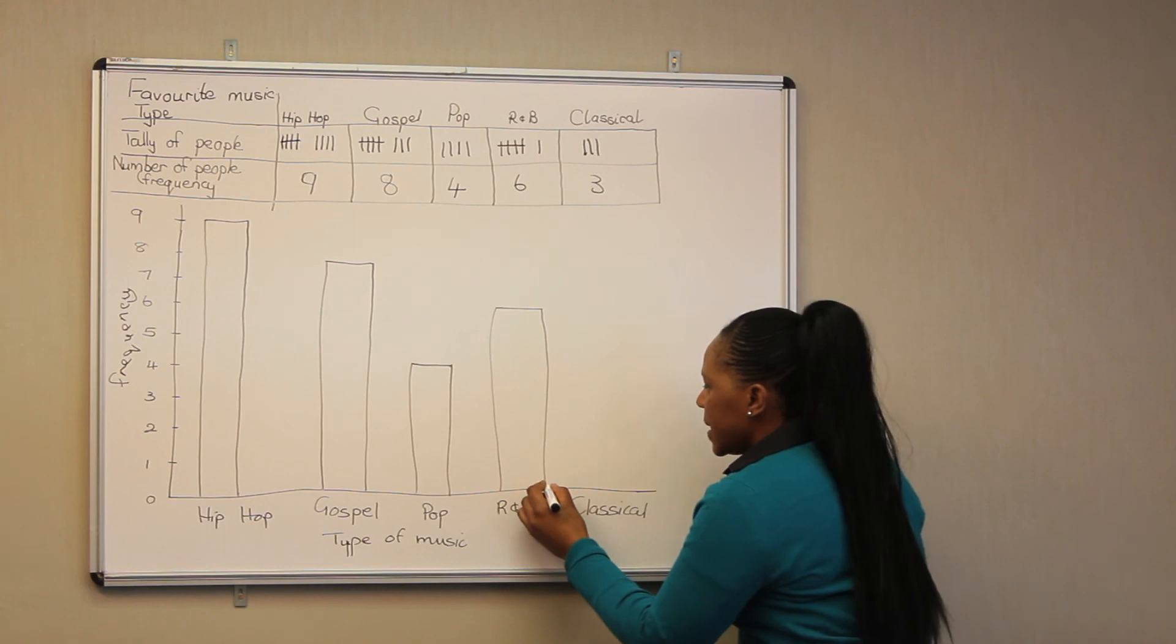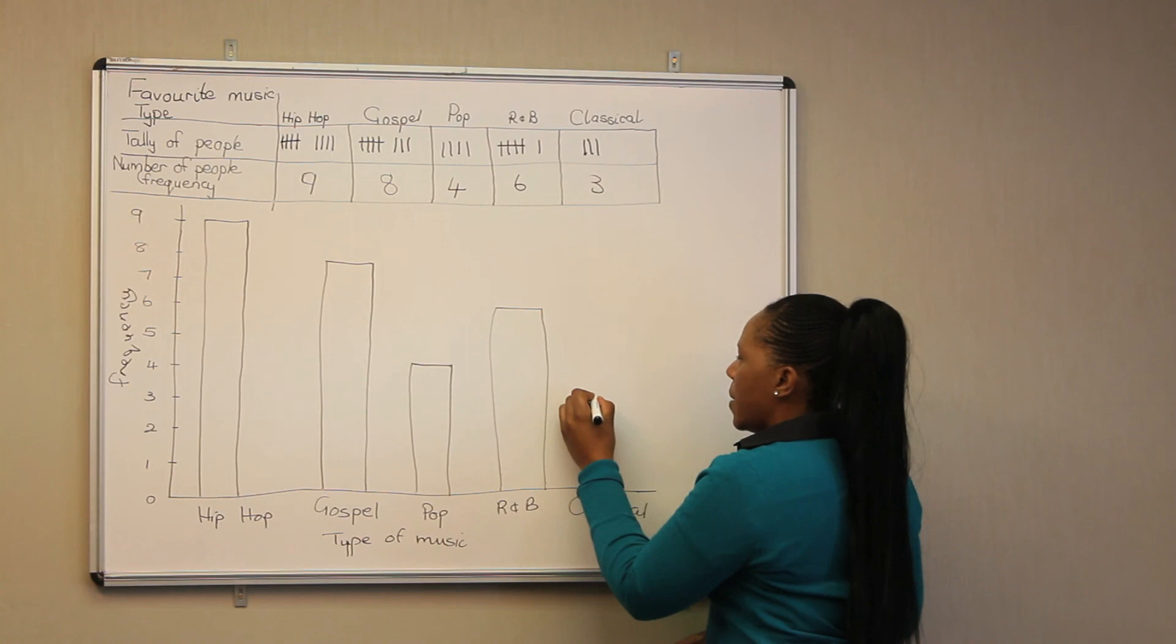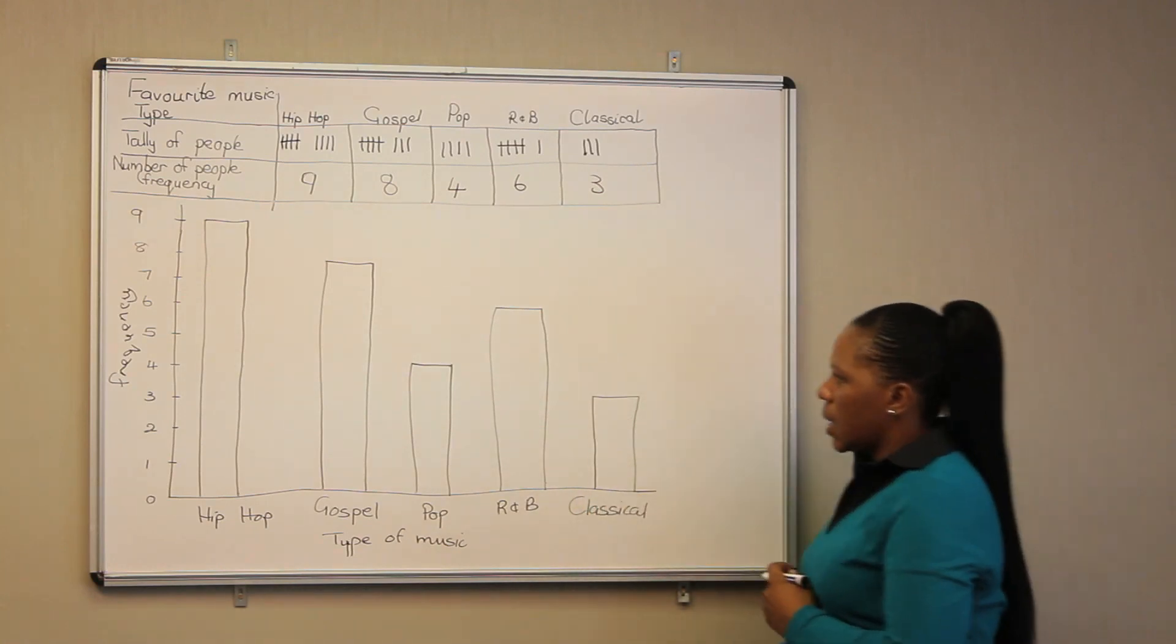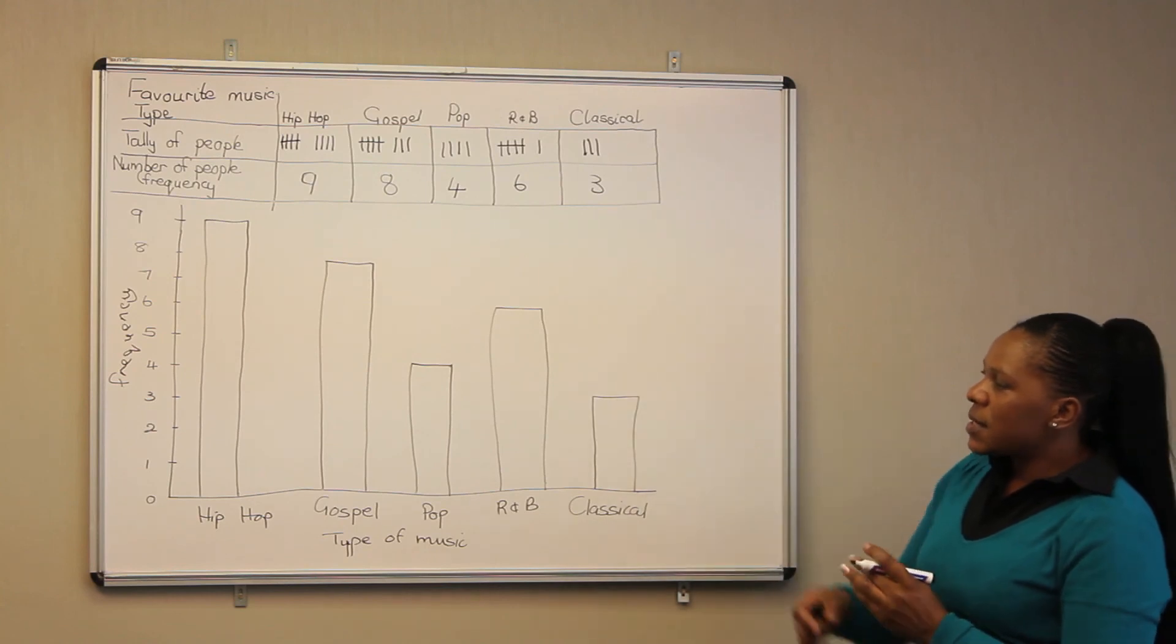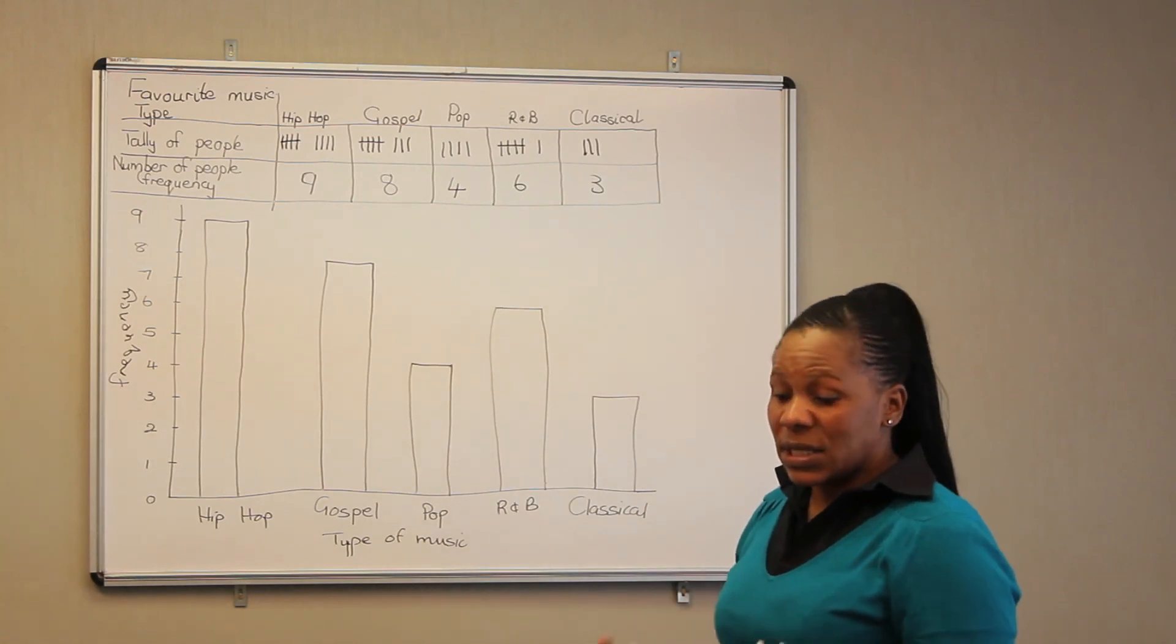And then for classical music, we have three people only, which will go up to somewhere there. So this is the biograph which represents the favorite type of music for a total of 30 people.